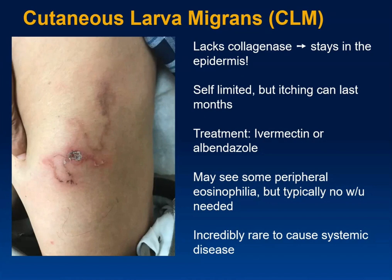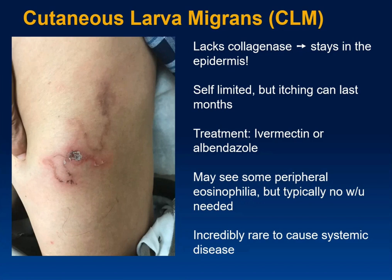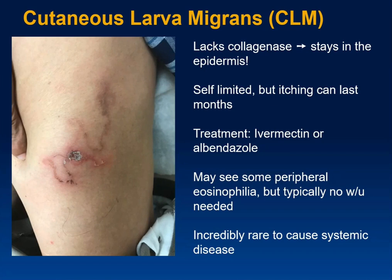The larva is migrating, trying to replicate in a dog, but can't find one — so it just keeps wandering inside of you. It stays in the dermis because it lacks collagenase and can't penetrate deeper tissues. It is self-limited and will eventually die, but the pruritus — since it's a foreign body — can last for months. Treatment is ivermectin or albendazole; ivermectin is more commonly used. Eosinophilia may be seen on labs, but it's usually not worth testing — just recognize and treat it.